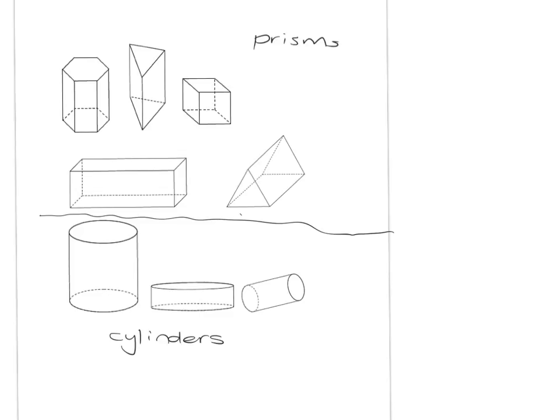We're going to discuss the volumes of some solids today. Just to remind you about what a prism is: a prism is a polyhedron where the top and the bottom base are exactly the same shape — congruent. So like if you've got a hexagon at the bottom, you've got exactly the same hexagon, same size, same shape, at the top and the bottom.